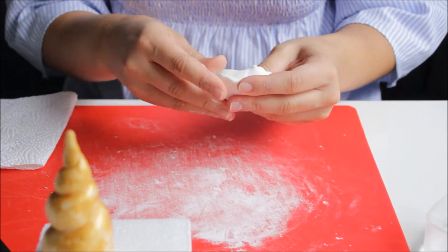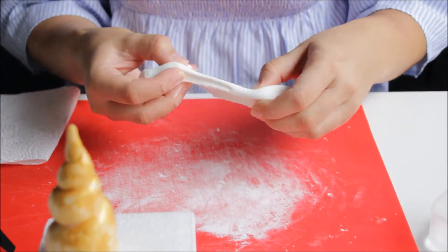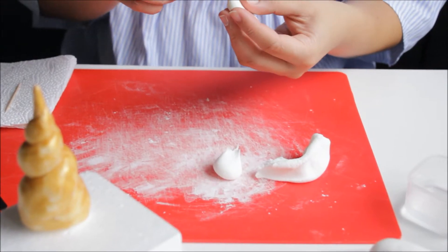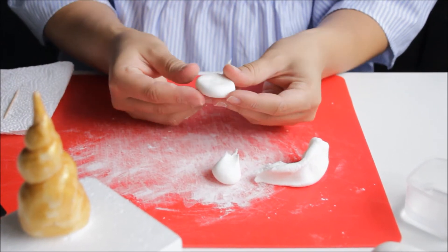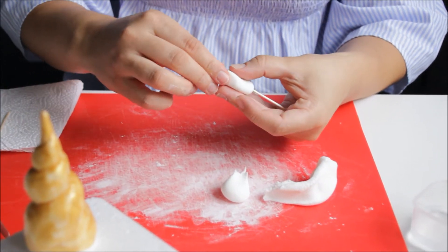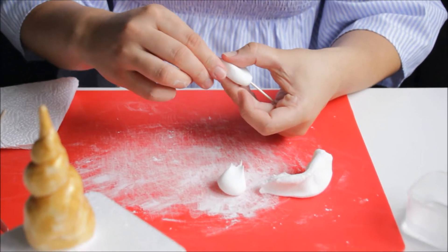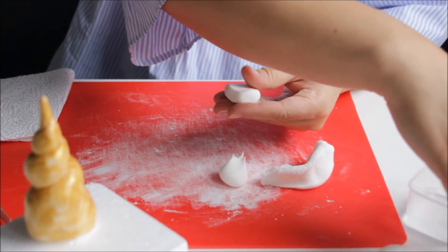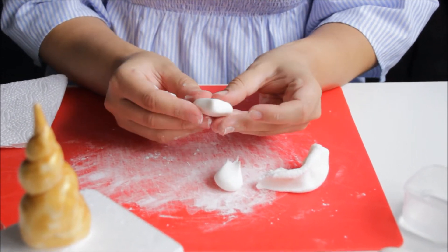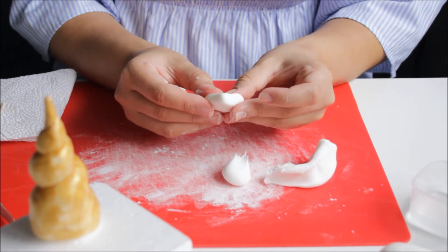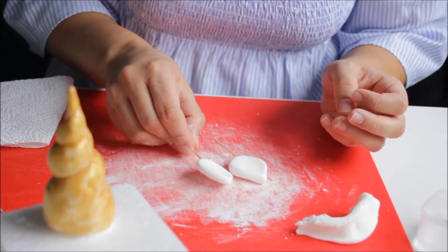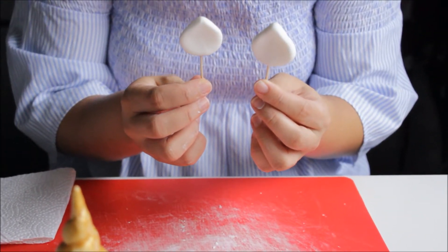I will be making the ears in the meantime. So just make a round shape, and then with your fingers, make the tip like this and mold them into the ears. So I have two ears ready.